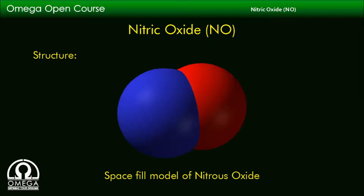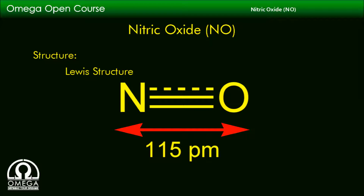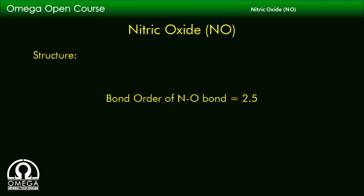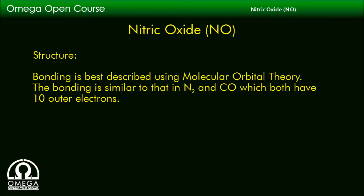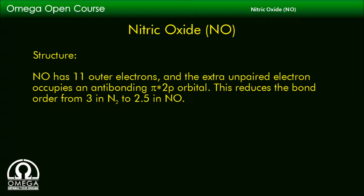Let us look at the structure of nitric oxide. This is the space-fill model of NO. The bond length of NO is 115 picometers, which is intermediate between a double and triple bond. The bond order of NO is 2.5. Bonding is best described using molecular orbital theory. The bonding is similar to that of nitrogen and carbon monoxide, which both have 10 outer electrons. NO has 11 outer electrons and the extra unpaired electron occupies an antibonding π* 2p orbital, which reduces the bond order from 3 in nitrogen to 2.5 in nitrogen monoxide.